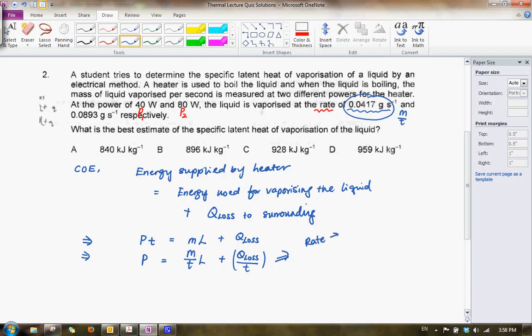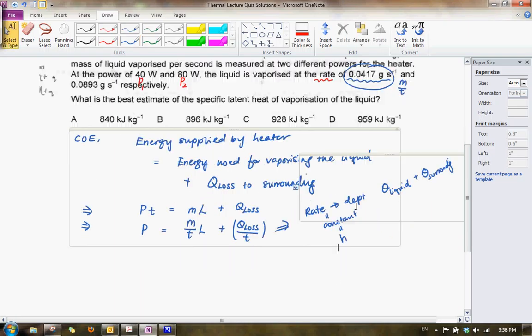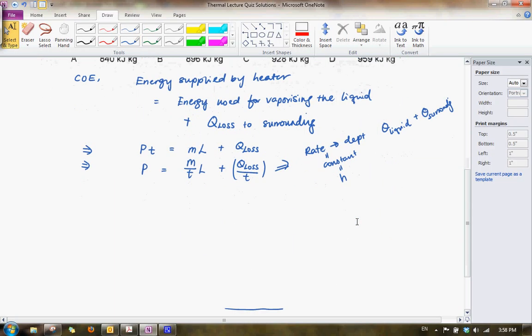And this rate is actually dependent solely on the temperature of the liquid and surrounding. And since it doesn't change, so we can assume that this rate is actually constant. And let me just let this be actually equals to H. Alright? So it makes it neater. And what we simply have is we have P equals to M over T times L plus H.